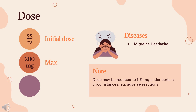Injection for migraine: 6mg (0.5mL) SC with auto-injector; may repeat in greater than or equal to 1 hour. Not to exceed 12mg SC Q24HR. Dose may be reduced to 1–5mg under certain circumstances, e.g., adverse reactions.